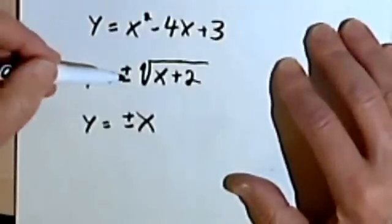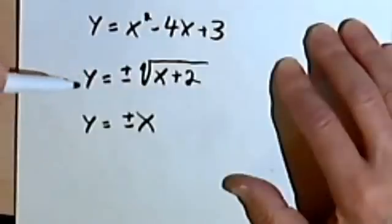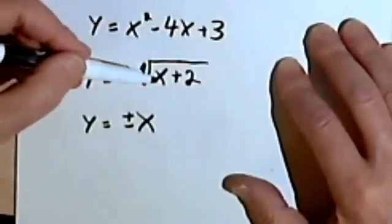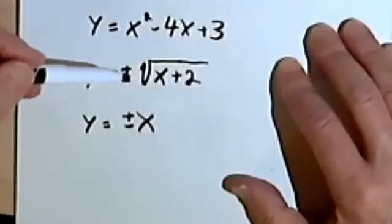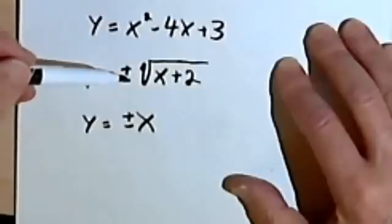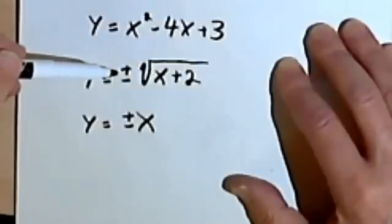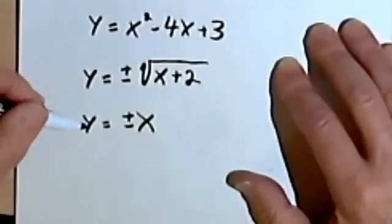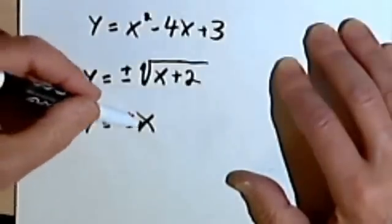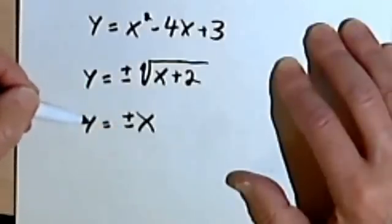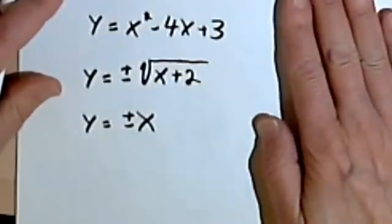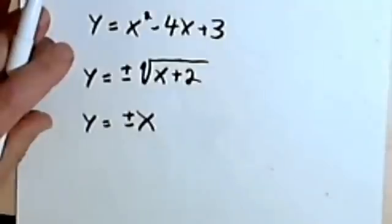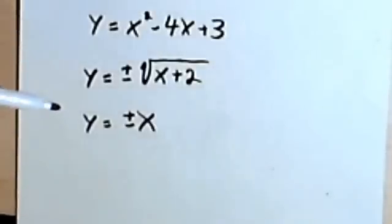What about y equals plus or minus the square root of (x plus 2)? That's not going to be a function, because once I figure out the square root, I'm going to say it's either plus that amount or minus that amount. A simple example of this non-function is y equals plus or minus x — if you tell me x is 2, maybe the output is 2, maybe it's negative 2. That's not a function. So basically, that's how you determine whether a relationship — given as a graph, a table, or an equation — is a function or not.